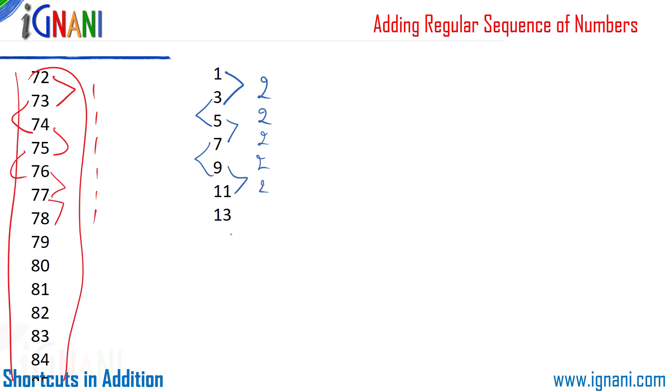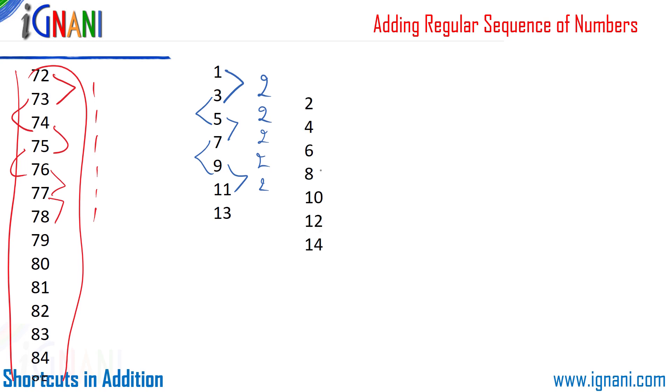Now let me take another example. This is a series of even numbers, and here as well the difference is just 2—that is, there is an increase of 2 between each number. Either it's odd or even numbers, the difference is just 2.